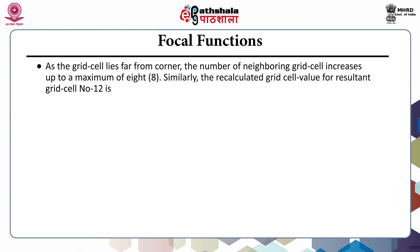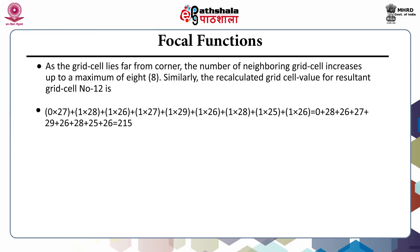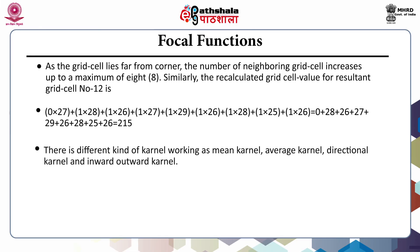Similarly, the recalculated grid cell value for resultant grid cell number 2 is: 0×26 + 1×28 + 1×26 + 1×27 + 1×28 + 1×25 = 0 + 28 + 26 + 27 + 28 + 25 = 154. As the grid cell lies further from the corner, the number of neighboring grid cells increases up to a maximum of 8. The recalculated grid cell value for resultant grid cell number 12 is 0×27 + 1×28 + 1×26 + 1×27 + 1×29 + 1×26 + 1×28 + 1×25 + 1×26 = 215, as seen in the output raster. There are different kinds of kernels: mean kernel, average kernel, directional kernel and inward-outward kernel.